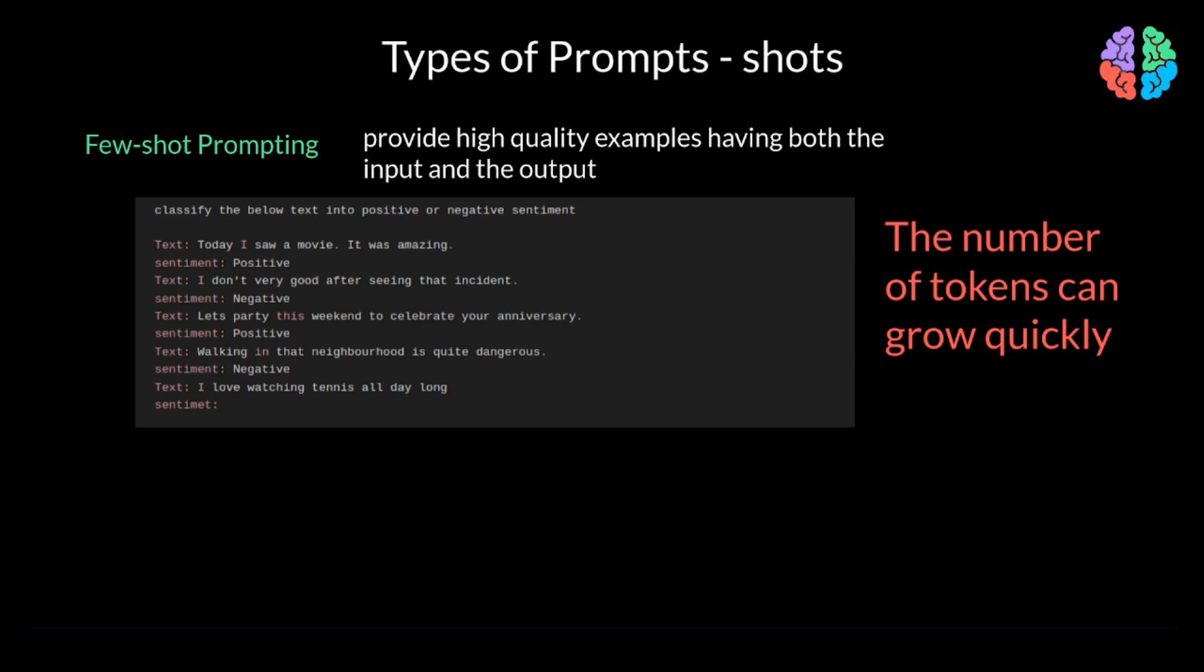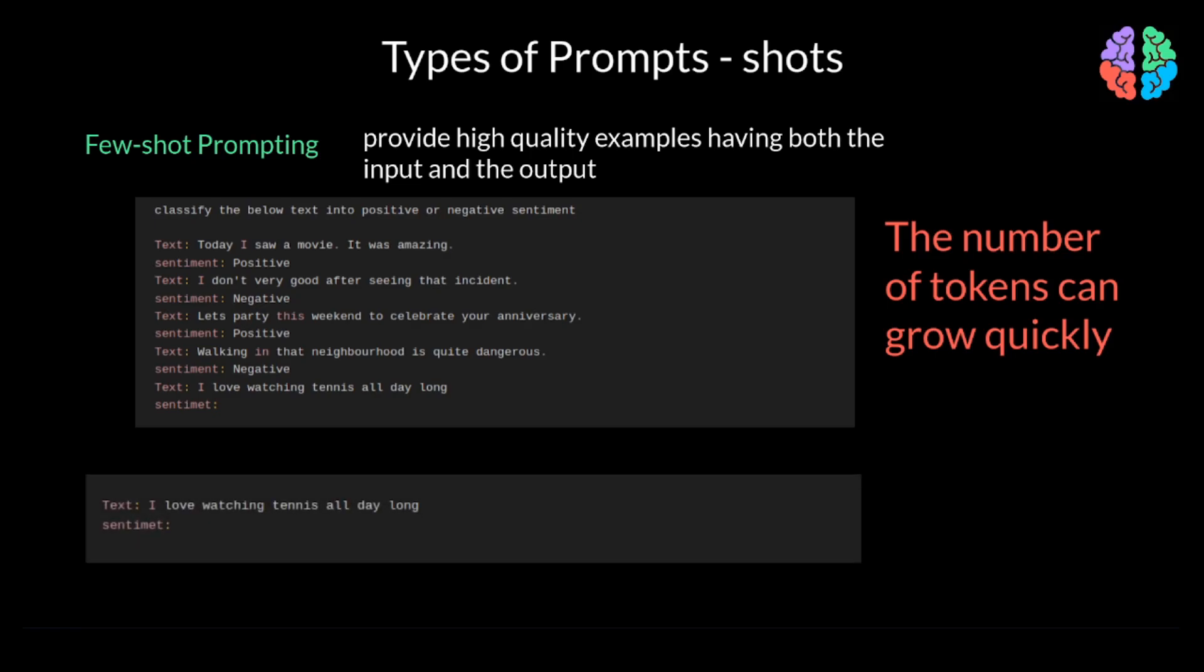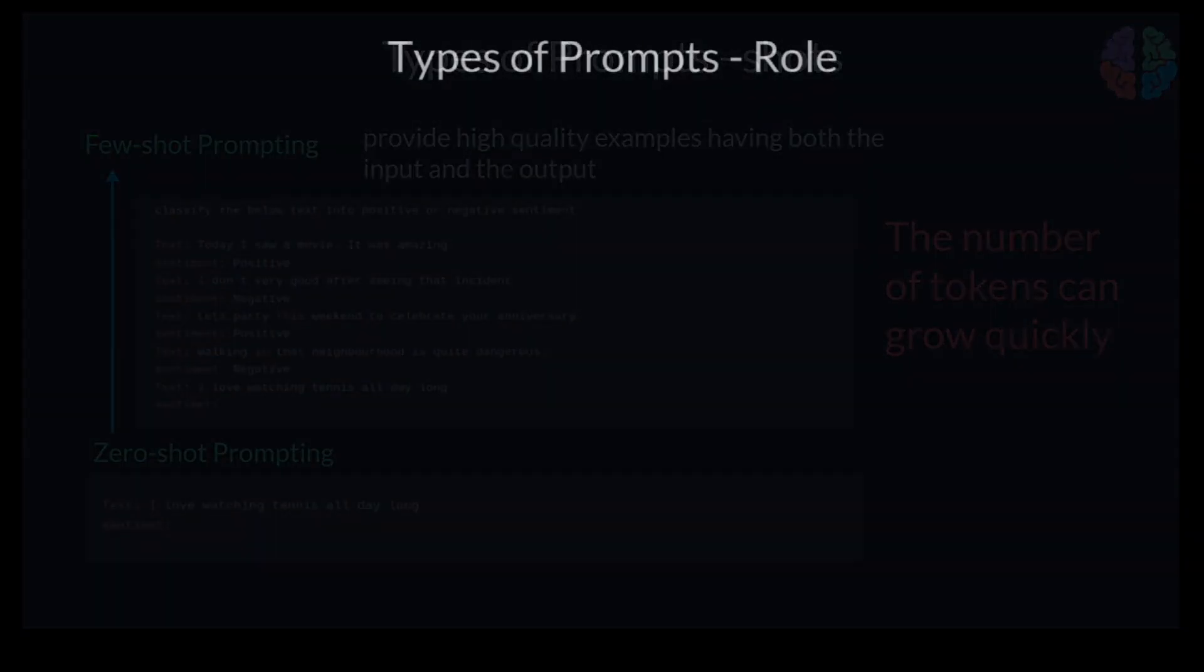If you wish to start simple, you need not provide any examples, but jump straight to the problem like this prompt. This is zero-shot prompting where you don't provide any examples, but still expect the model to answer you properly. Typically, while prompting, you start with zero-shots as it's simpler, and based on the response, you move to few-shots by providing examples to get better results.